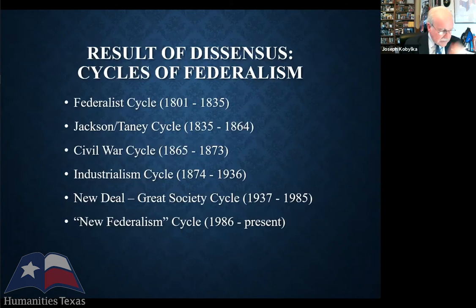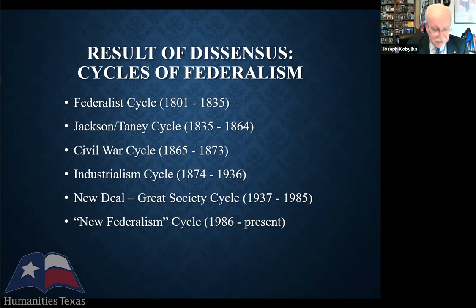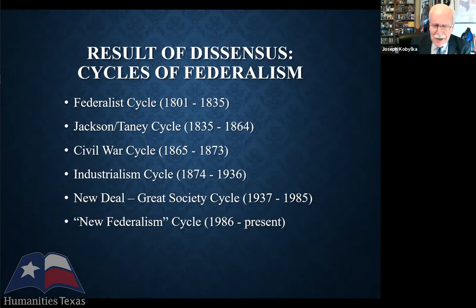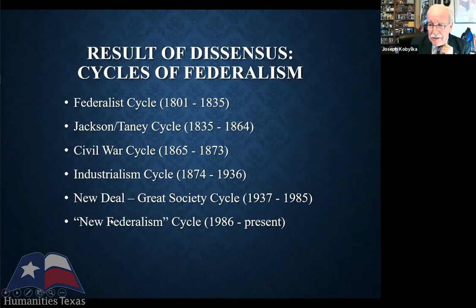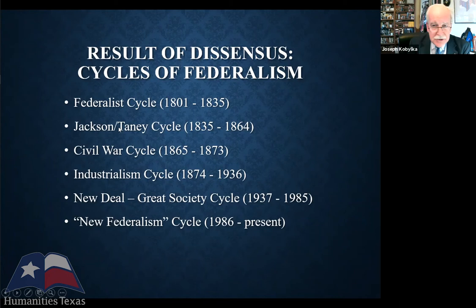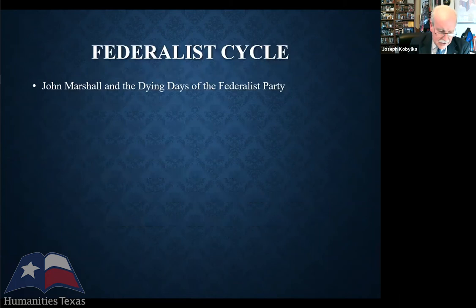The story I want to tell — and it's difficult for those who teach American history because you're teaching the first half in eighth grade and the second half in eleventh grade, which always astounded me pedagogically, since students can't remember on Monday what we talked about on Friday — involves six cycles: the Federalist cycle, the Jacksonian cycle, the Civil War cycle, the industrialism cycle, the New Deal, and then the new federalism. Each cycle represents a turn of the wheel, with nationalism and states' rights alternating on top.